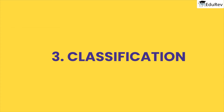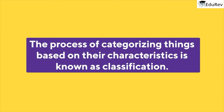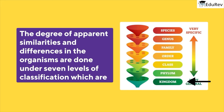Moving on to the third principle of taxonomy — that's classification. The process of categorizing things based on their characteristics is known as classification. Organisms sharing similarities in their physical traits and capability of interbreeding are grouped together. The degree of apparent similarities and differences in the organisms are organized under seven levels of classification, which are: kingdom, phylum, class, order, family, genus, and species.